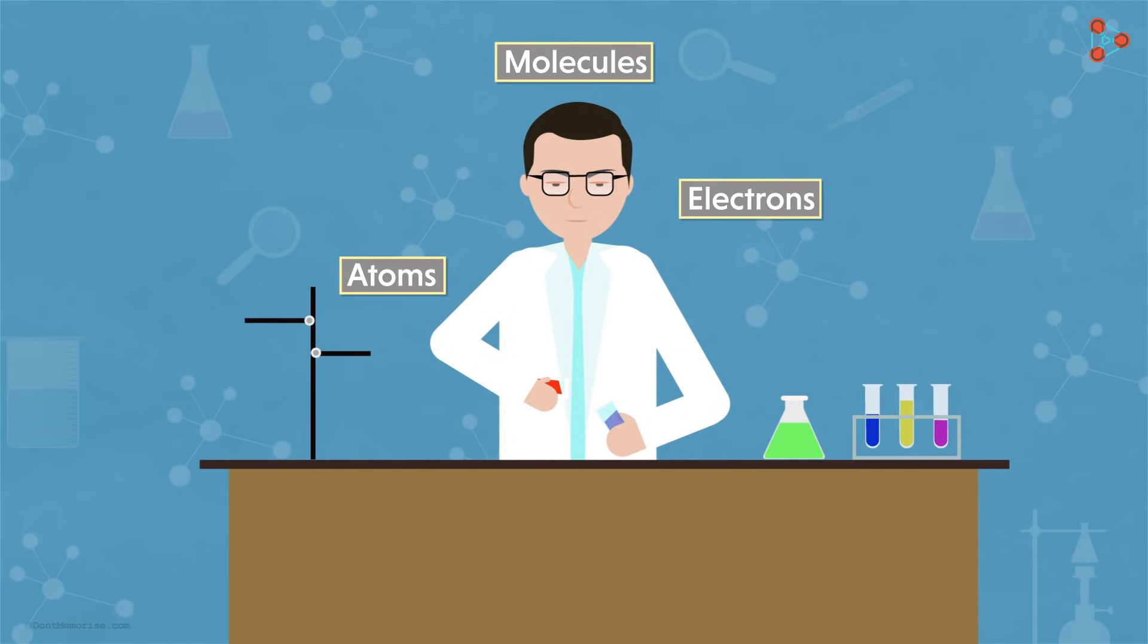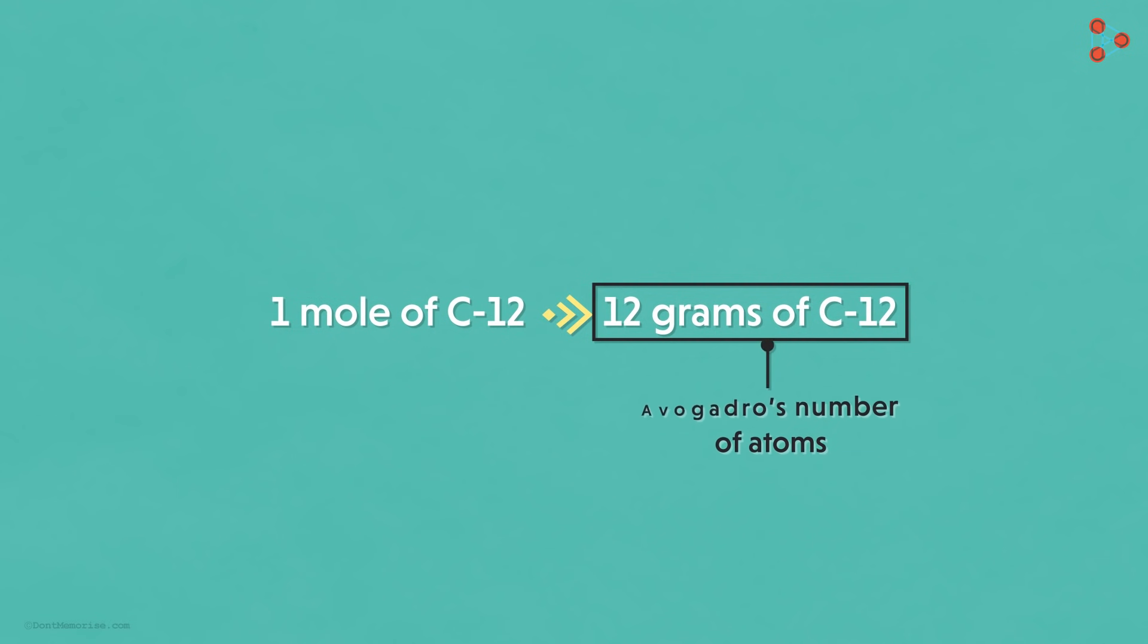Let's talk about one last concept. We know that 1 mole of carbon-12 is 12 grams of carbon-12. That's because 12 grams of carbon-12 has the Avogadro's number of atoms. Now let me ask you a question. If you answer this correctly, it means you've understood the concept of mole.